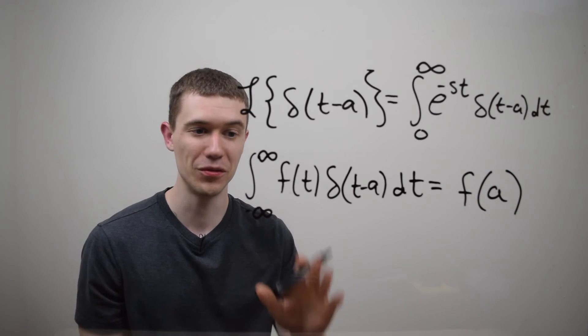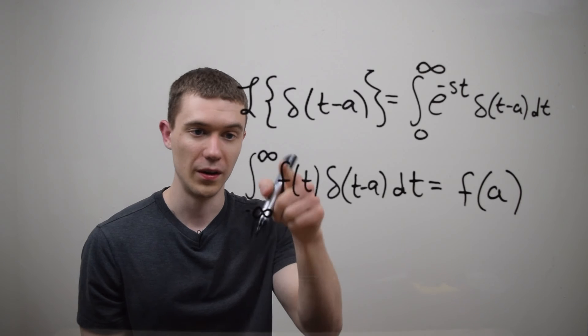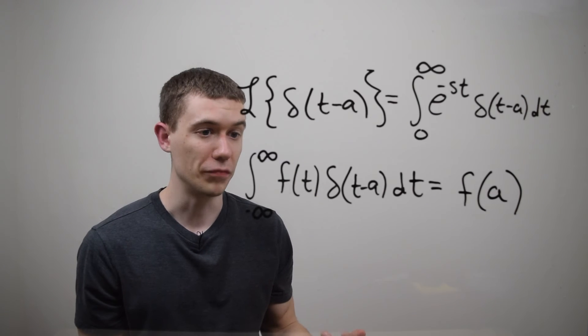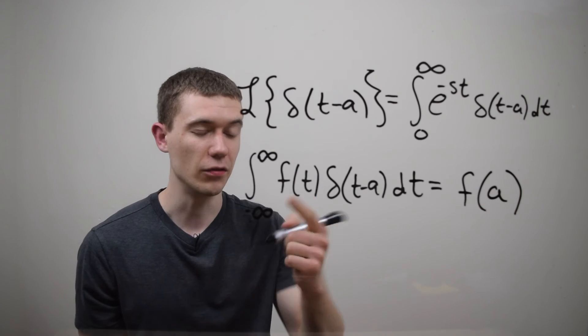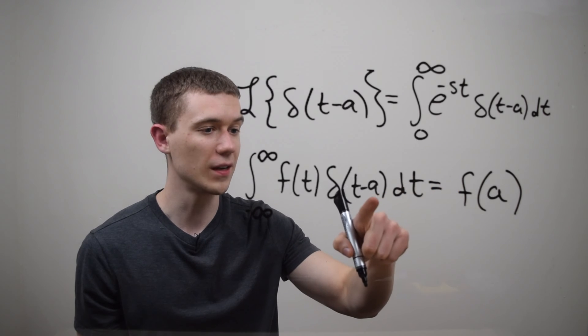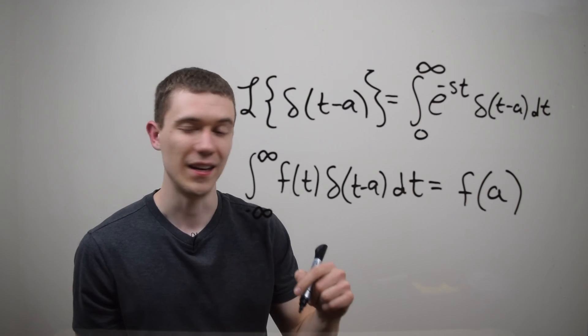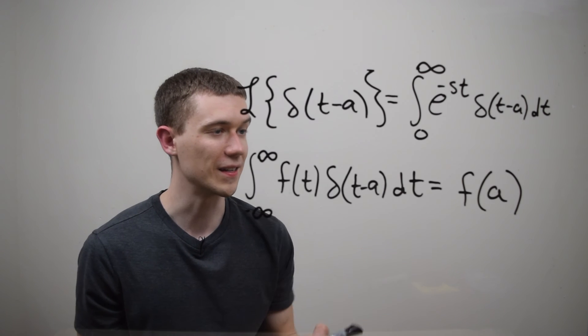So anytime you're integrating a function times the Delta function over the interval, it's simply just plugging the a value into this function. That's all I'm doing here. As long as a is contained in this interval, as long as a is between zero and infinity, this makes sense to do.